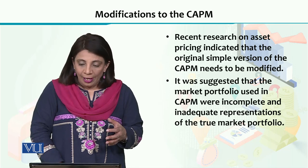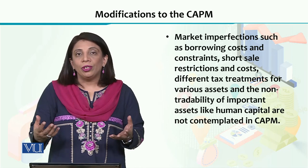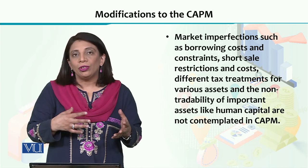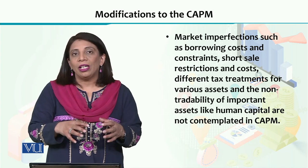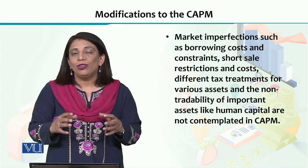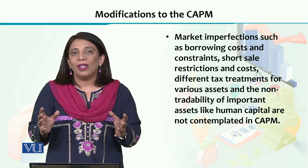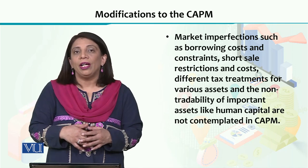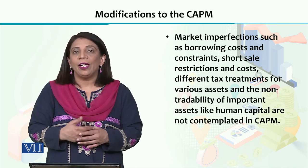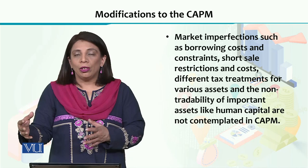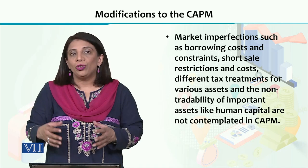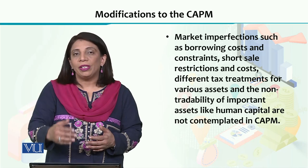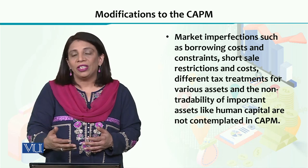People came up with different new models in which they recognized that the market doesn't operate perfectly — there are imperfections, there are shocks, there is a regulator's role, and there could be a number of stakeholders who have to maximize their personal benefits or profits through certain strategies.